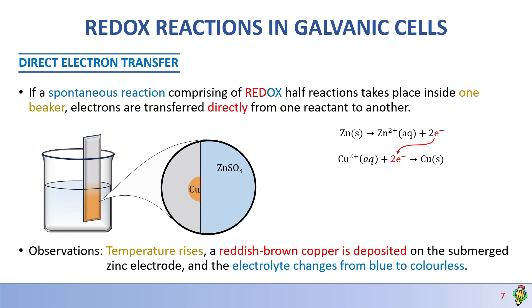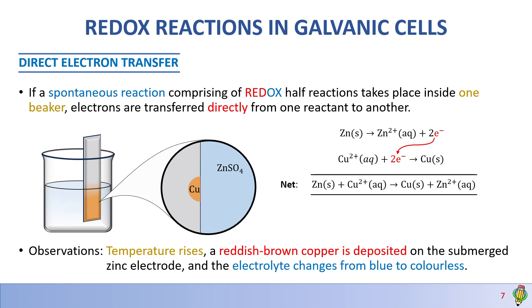If we combine the two half reactions, we get what we call the net ionic reaction, where we cancel the two electrons and end up with reactants on the reactant side and products on the product side. We started with zinc solid and copper sulfate aqueous and end up with copper solid and zinc sulfate aqueous. The zinc metal is silver in color, the copper sulfate is blue, the copper metal is reddish-brown, and zinc sulfate is colorless. This explains our observations.